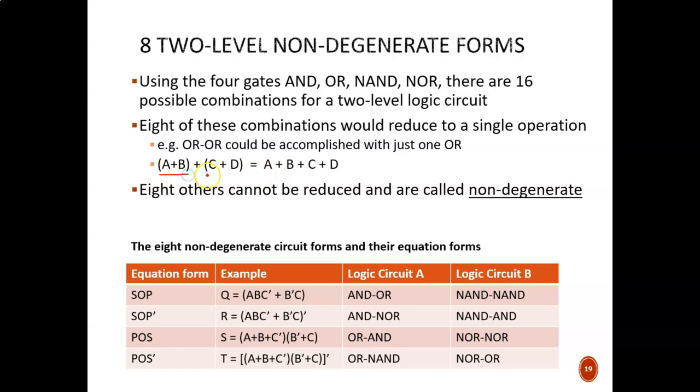rather than having two separate layers of ORs, we could just have one big four-input OR gate. That would be called a degenerate orientation. This leaves eight others that are non-degenerate two-level circuits.